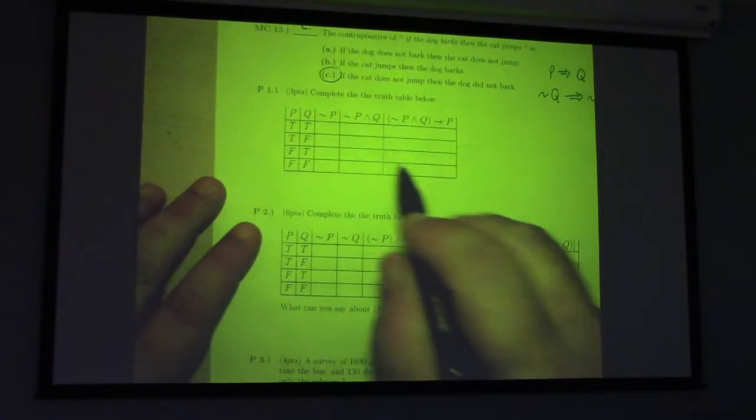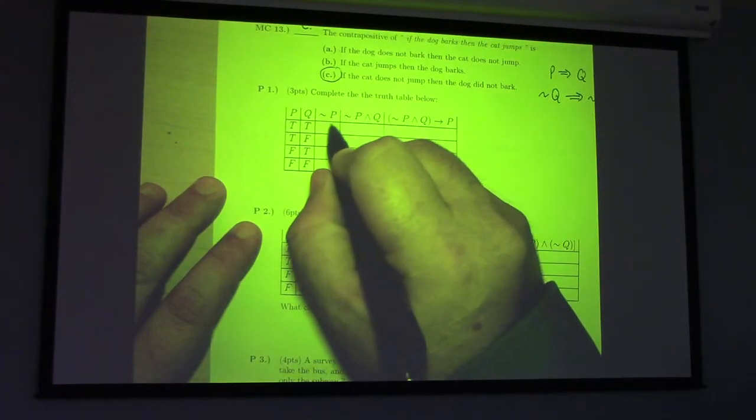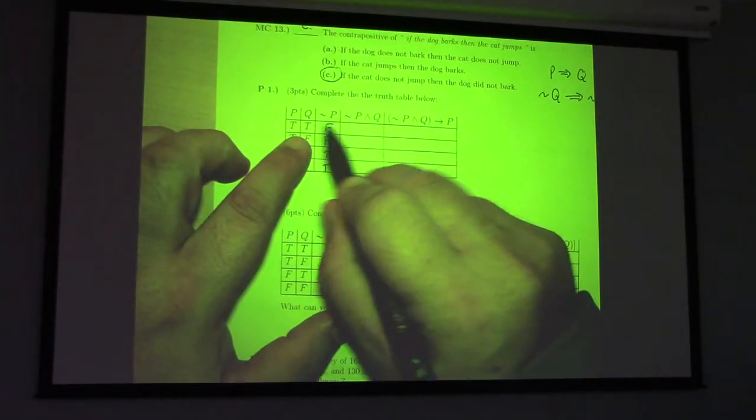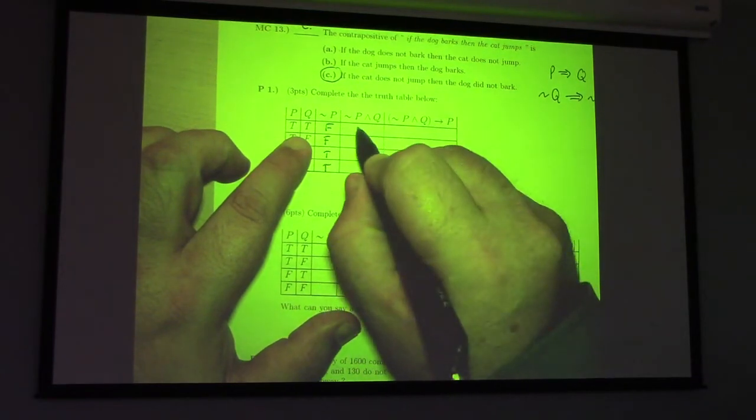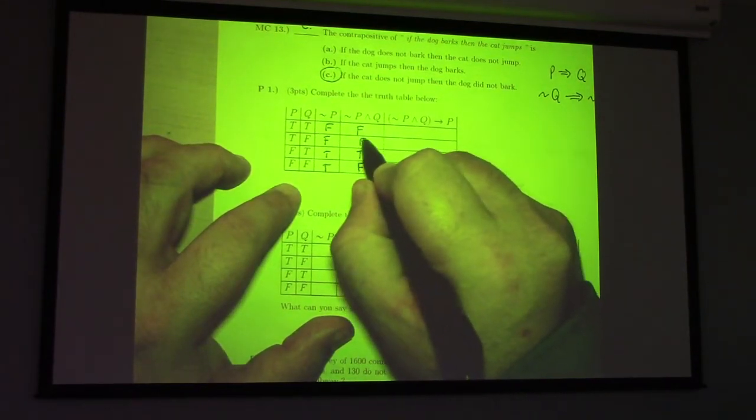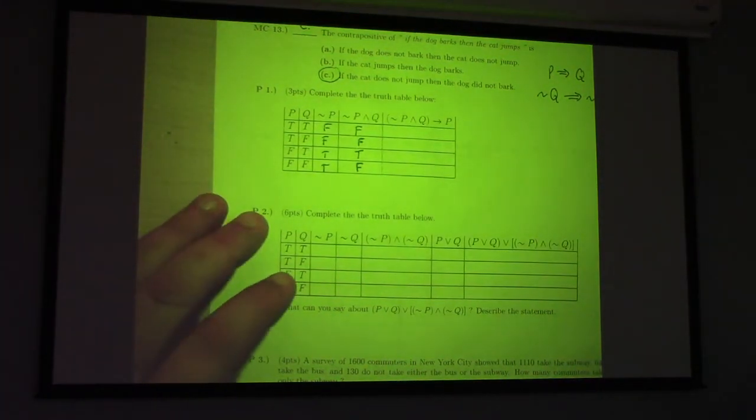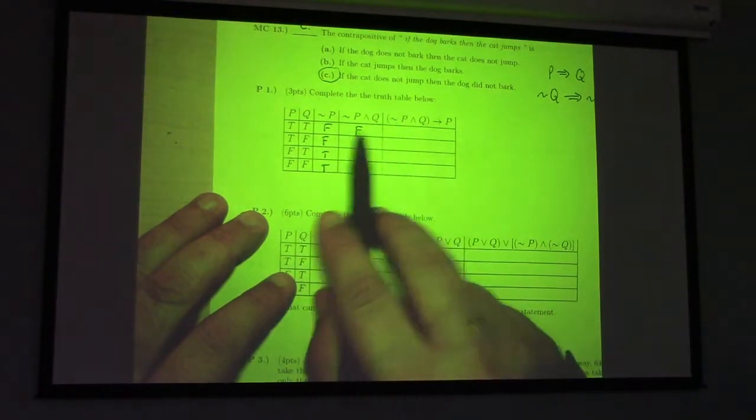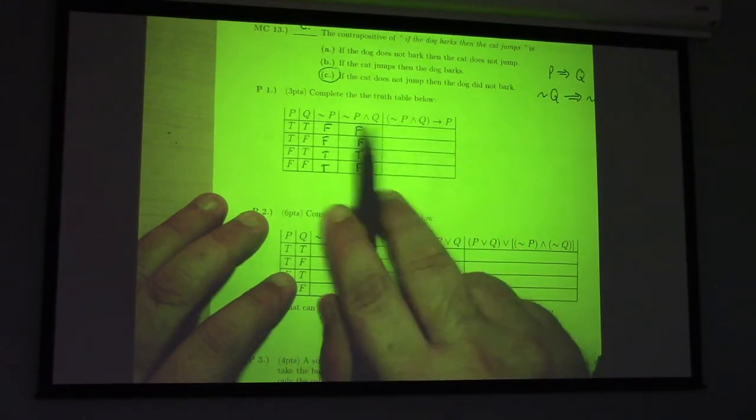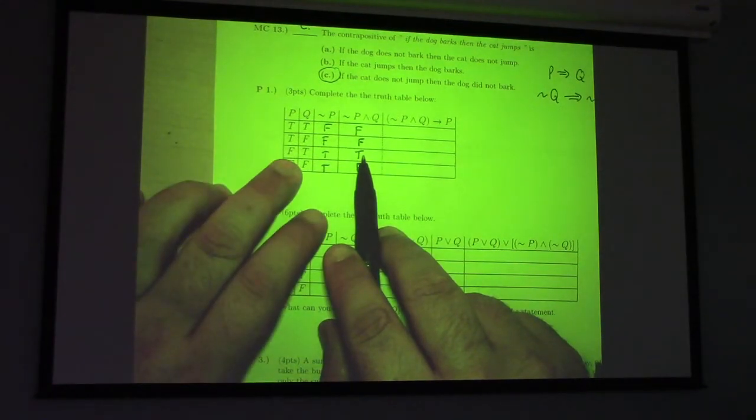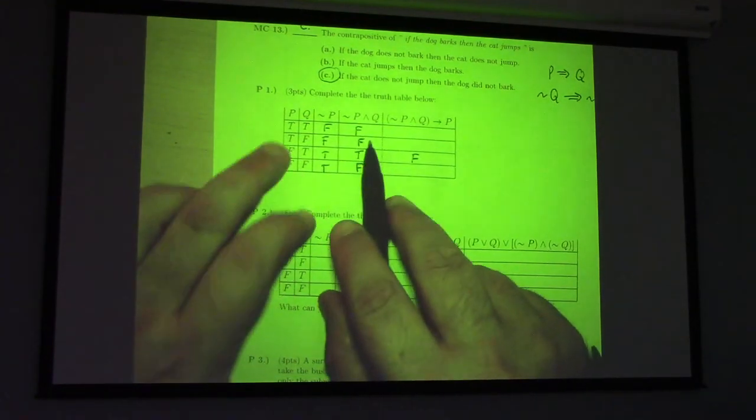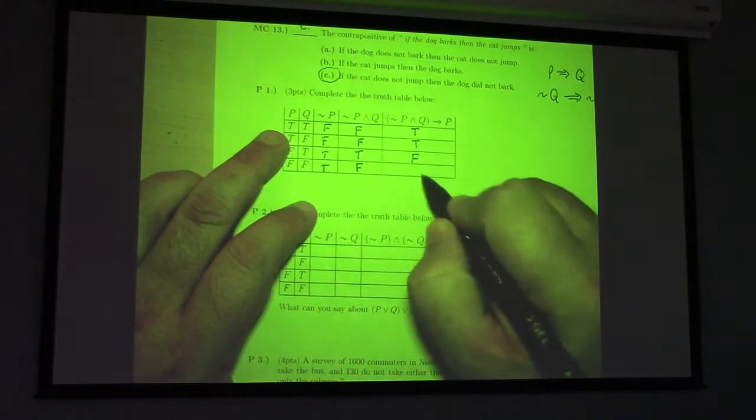Let's fill out the truth table. Here we go. Not P is false, false, true, true. We got to look at these two, right? So, if they're both true, it's true, otherwise it's false. So, we got false, false, true, false. Then, the implication, the only way you get the implication to be false, is if we have true implies false. So, is there a true in this thing right here? Just this one right here, right? True implies false? Oh, that's false. So, that makes the conditional false, since we have true implies false. But, otherwise, we've got false implies false, false implies true, false implies true. Those are all true conditionals. So, t, t, f, t.